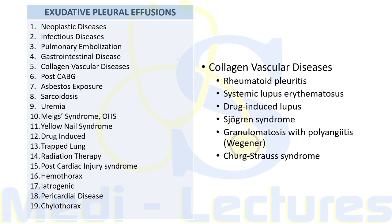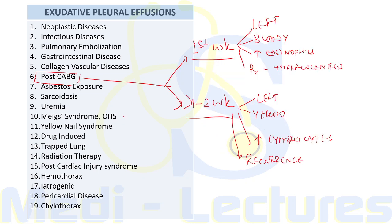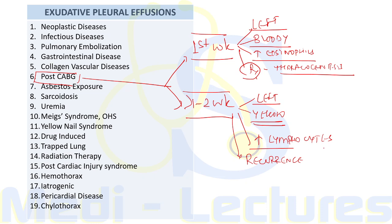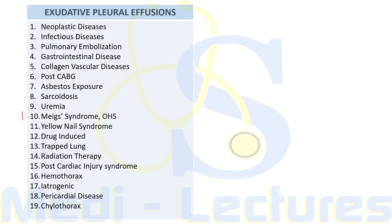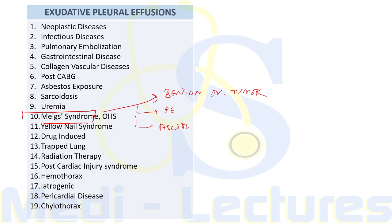Collagen vascular diseases causing exudative pleural effusion include rheumatoid pleuritis, SLE, drug-induced lupus, Sjögren's syndrome, Wegener's granulomatosis, and Churg-Strauss syndrome. In post-CABG patients, in the first week the effusion is usually left-sided, bloody, with increased eosinophils, and responds to one to two therapeutic thoracocenteses. After one to two weeks, the effusion is left-sided, clear yellow, with increased lymphocytes, and recurrence is common. Meig's syndrome is a triad of benign ovarian tumor, pleural effusion, and ascites.